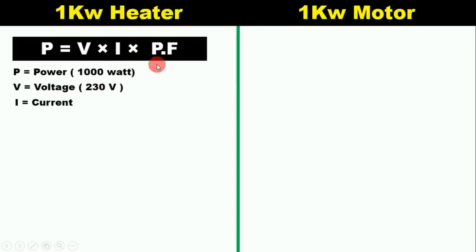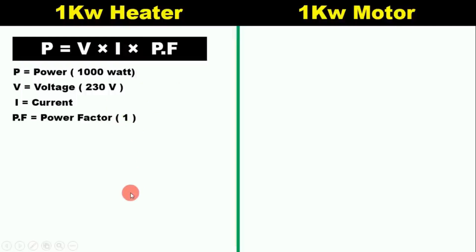Now we need to find the current. The power factor of the heater is 1. Why is the power factor 1? Because the heater is a resistive load, and the power factor of all pure resistive loads will always be 1. So we write power factor here as 1.